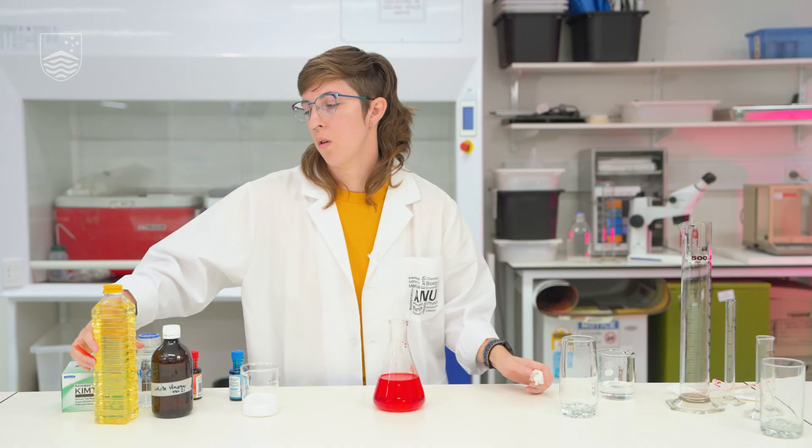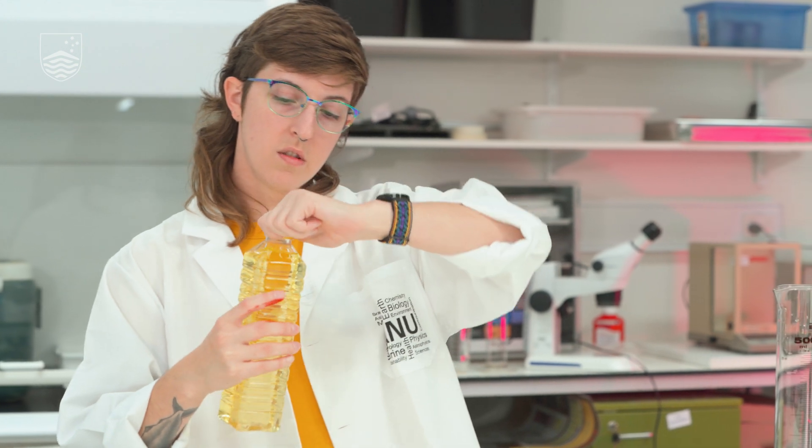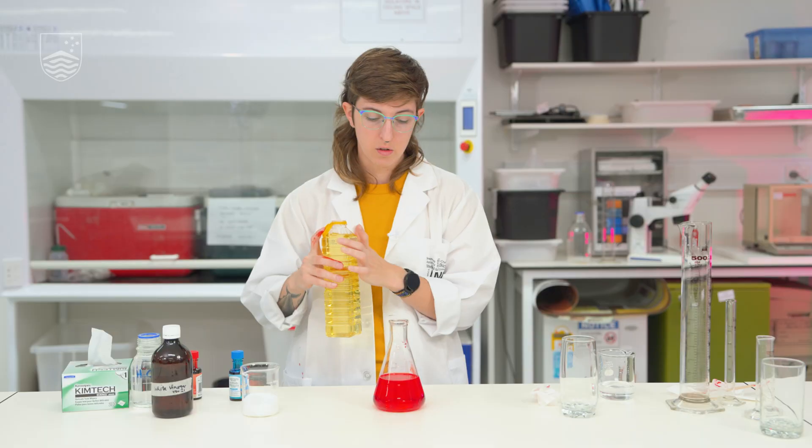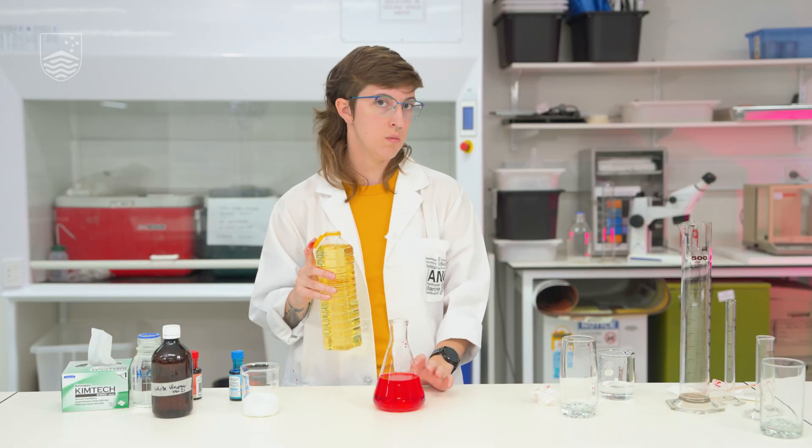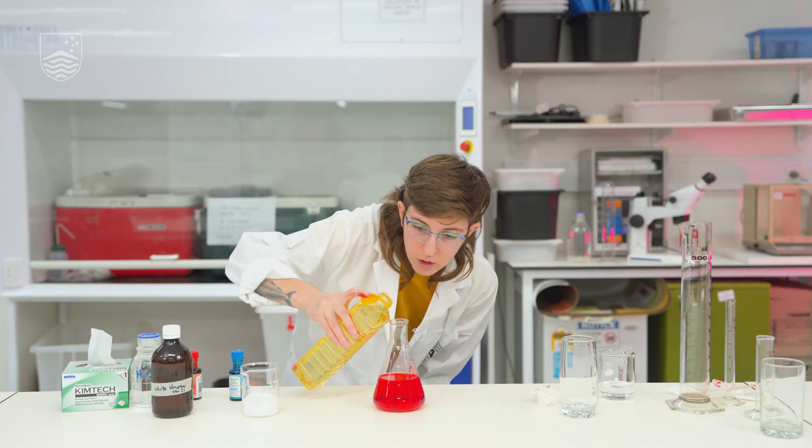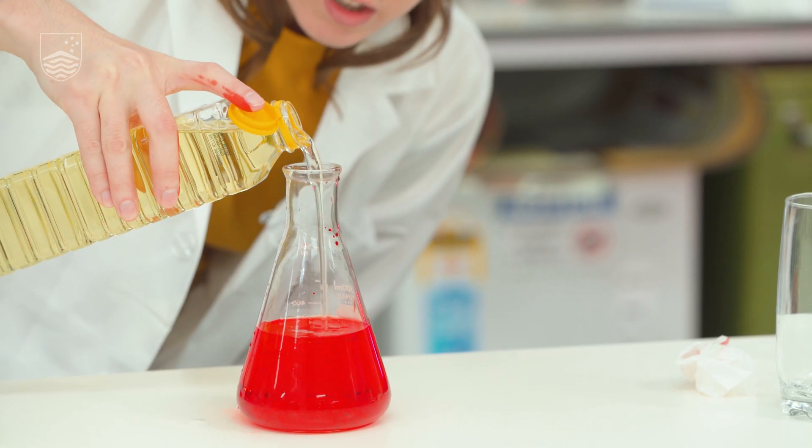And then we'll carefully pour our oil on top. For the oil, we're going to use about as much oil as we use both the water and vinegar together. So if I used about 200 milliliters of water and 200 milliliters of vinegar, I'm going to use about 400 milliliters of oil. But the point is just to have a good layer of oil floating on top of everything at the end.